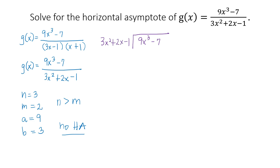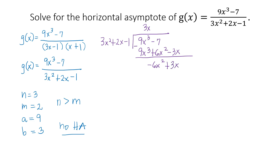9x³ divided by 3x² is 3x. Then multiply 3x by all terms of the divisor: 3x times 3x² is 9x³, 3x times 2x is positive 6x², and 3x times −1 is −3x. Subtracting 9x³ + 6x² − 3x from 9x³ − 7: 9x³ minus itself is 0, 0 minus 6x² is −6x², 0 minus (−3x) is +3x, and −7 minus 0 is −7.